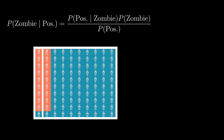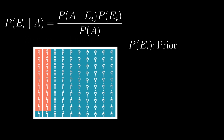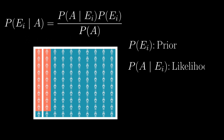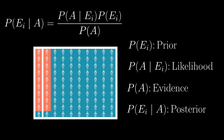Up until this point, I haven't really delved into the terminology used to describe Bayes' theorem, but now that we've stepped through it at length, let's quickly define each term. The probability of E is what we call our prior — in other words, prior to the test, what is the chance that someone is, say, a zombie? The probability of A given E is what we call our likelihood: how likely are we to observe a positive test result given that someone is a zombie? The probability of A is our evidence — what is the chance we will observe a positive test, which truncates our original space of possible outcomes?